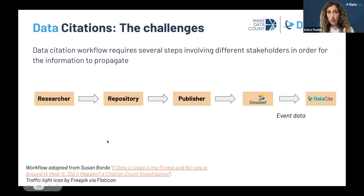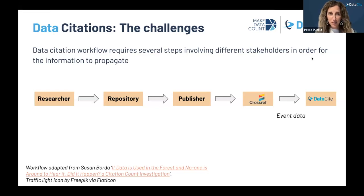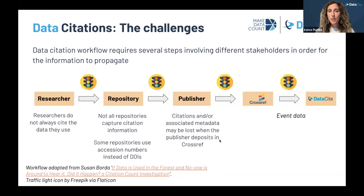Looking at the other side of the workflows for publishers, there has been some community discussion around best practices for collecting citations to data from their publications, but publishers haven't really prioritized workflows. They are not currently optimized for many journals in terms of capturing that data citation information. To zoom in on these challenges specifically for data citations, collecting these data citations requires several steps involving different stakeholders that may have different priorities in terms of implementation.